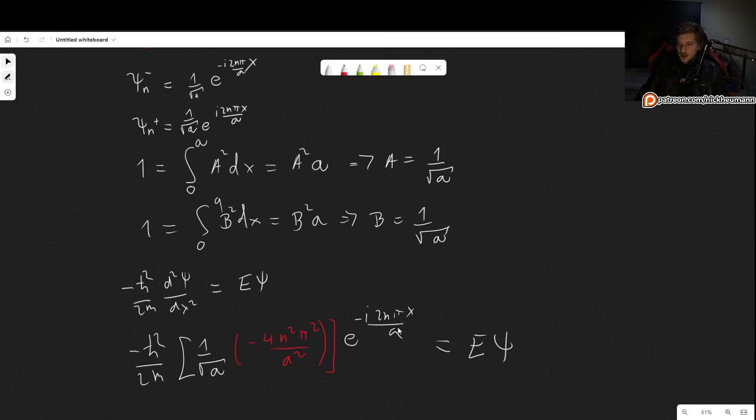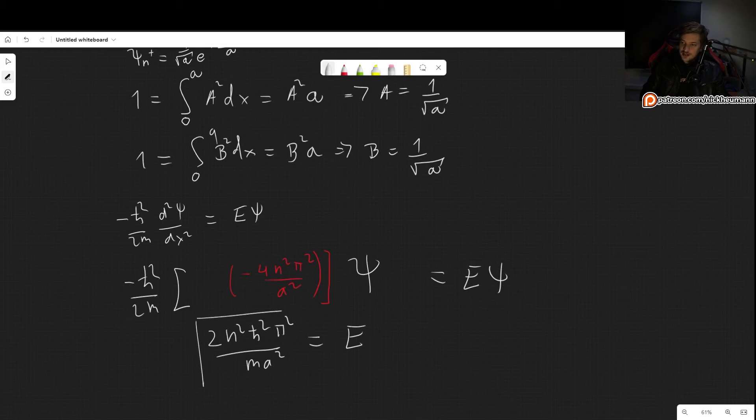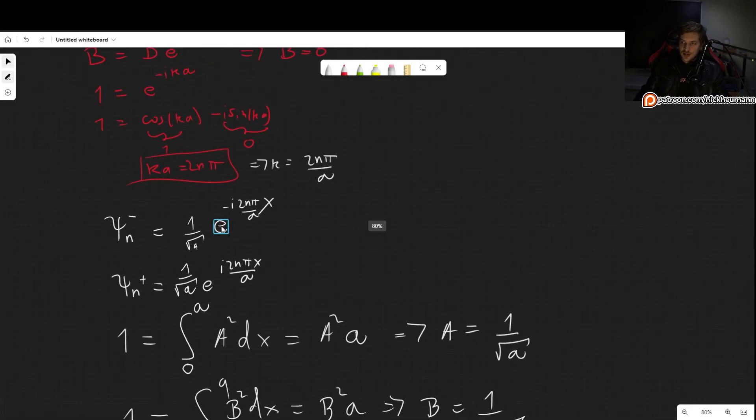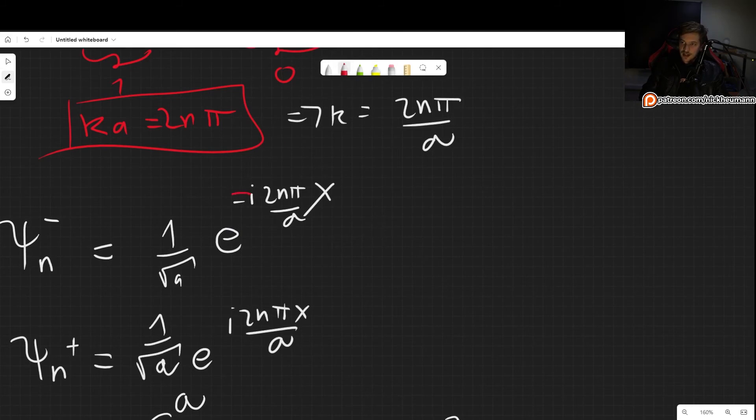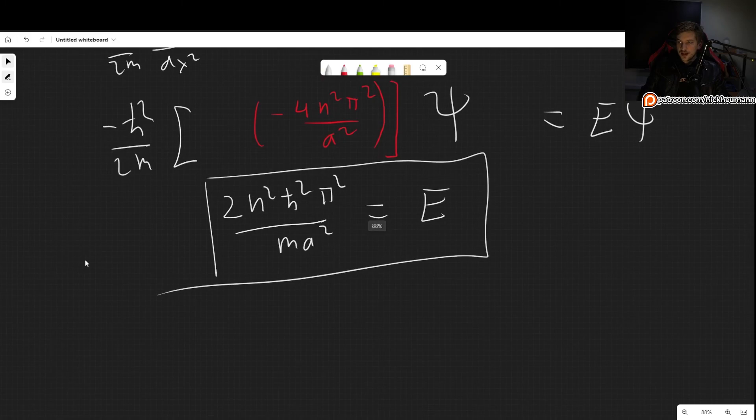And this is multiplying the exponent e^(-i2nπx/a). This equals Eψ. But of course, this 1 over square root of a and this combined are our wave function ψ. So now we just multiply all of our constants through, and we get that 2n²ℏ²π²/(ma²) equals our energy. And we get the exact same result for the other case, because the only difference was this minus sign, but since we took two derivatives, the minus turned into a plus. So there is no difference.